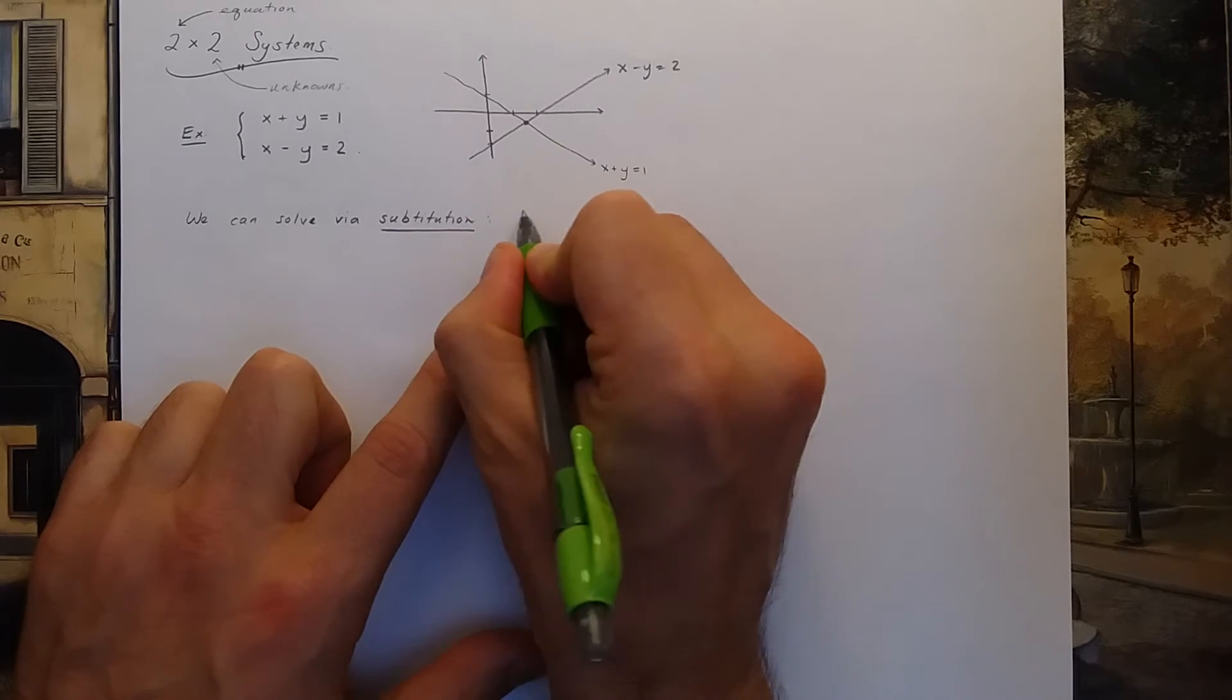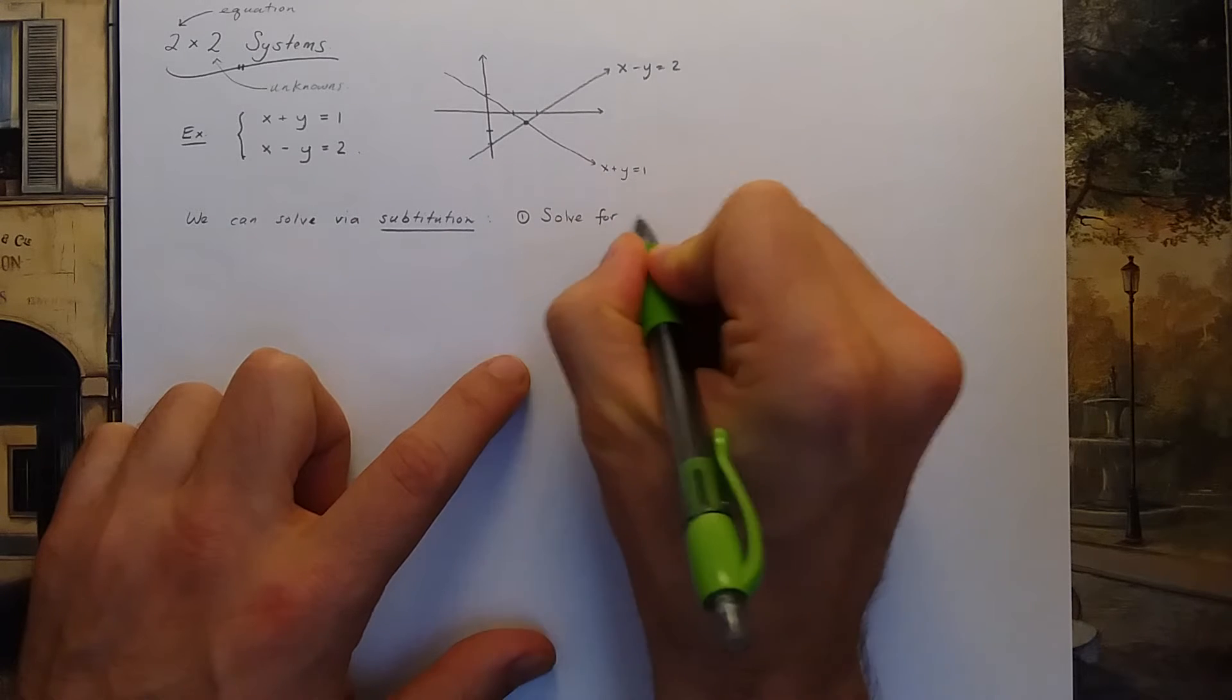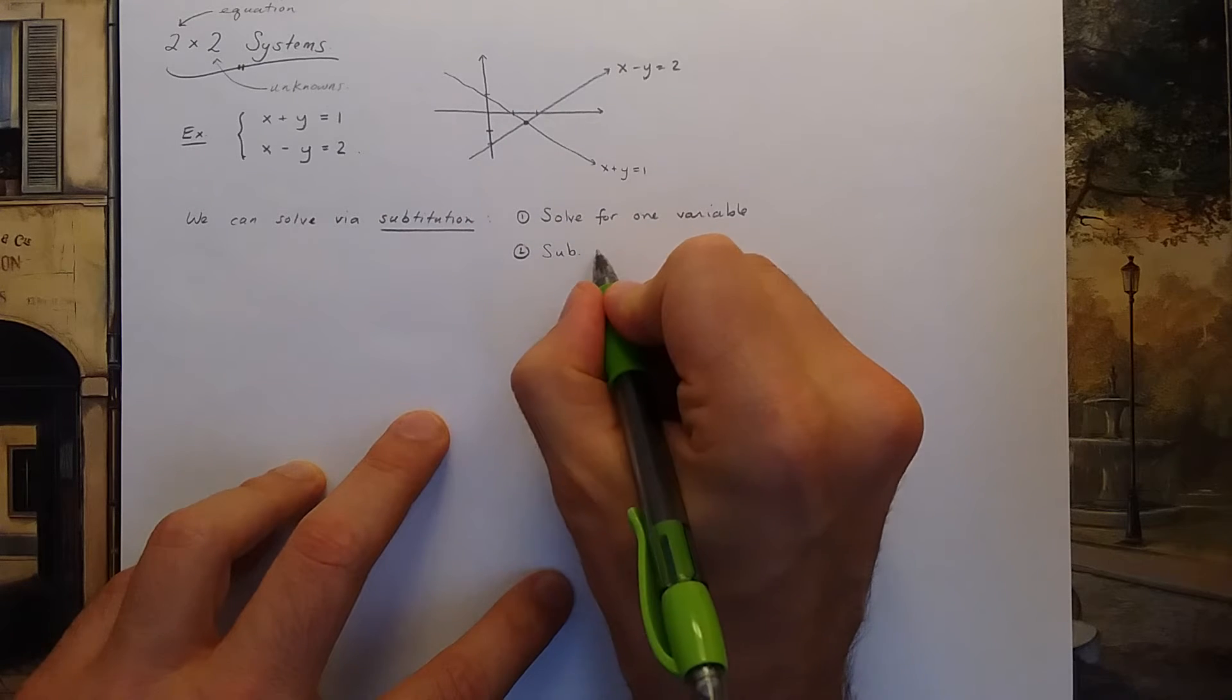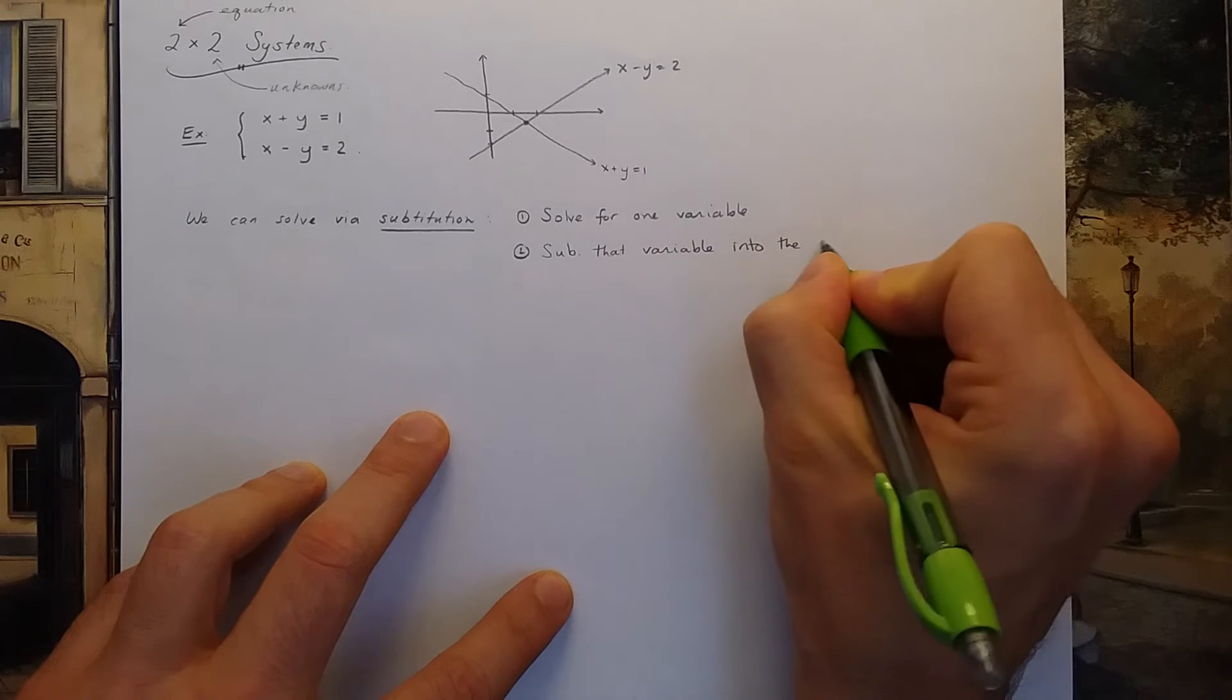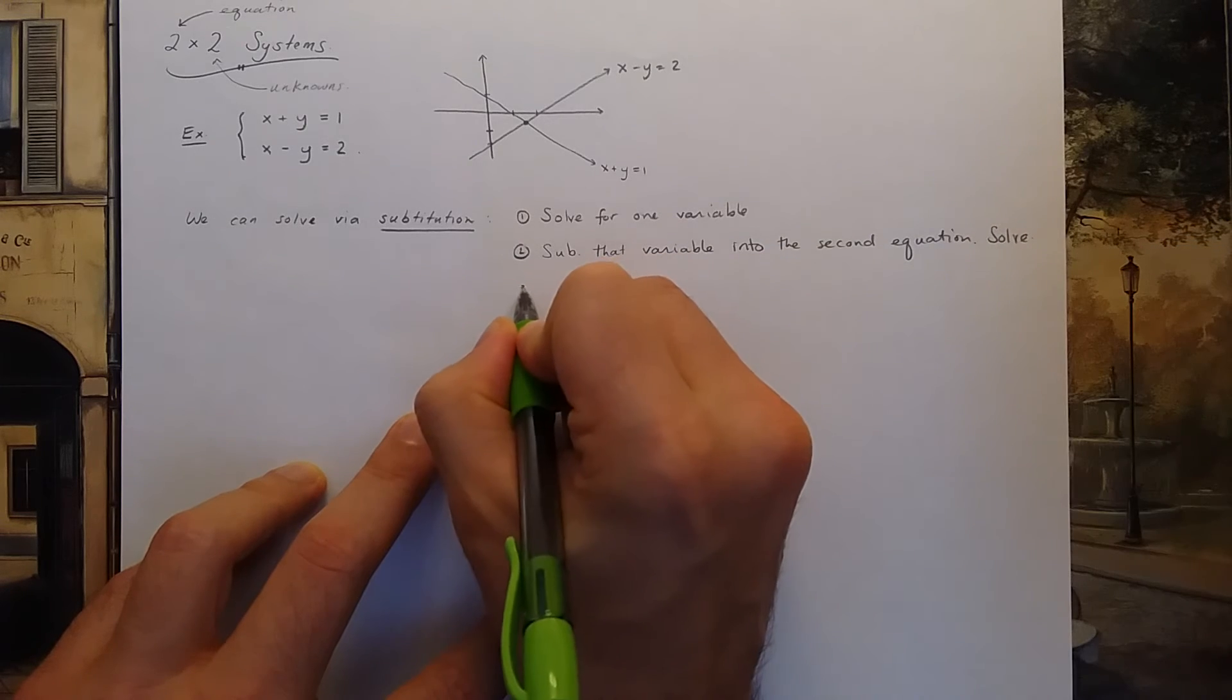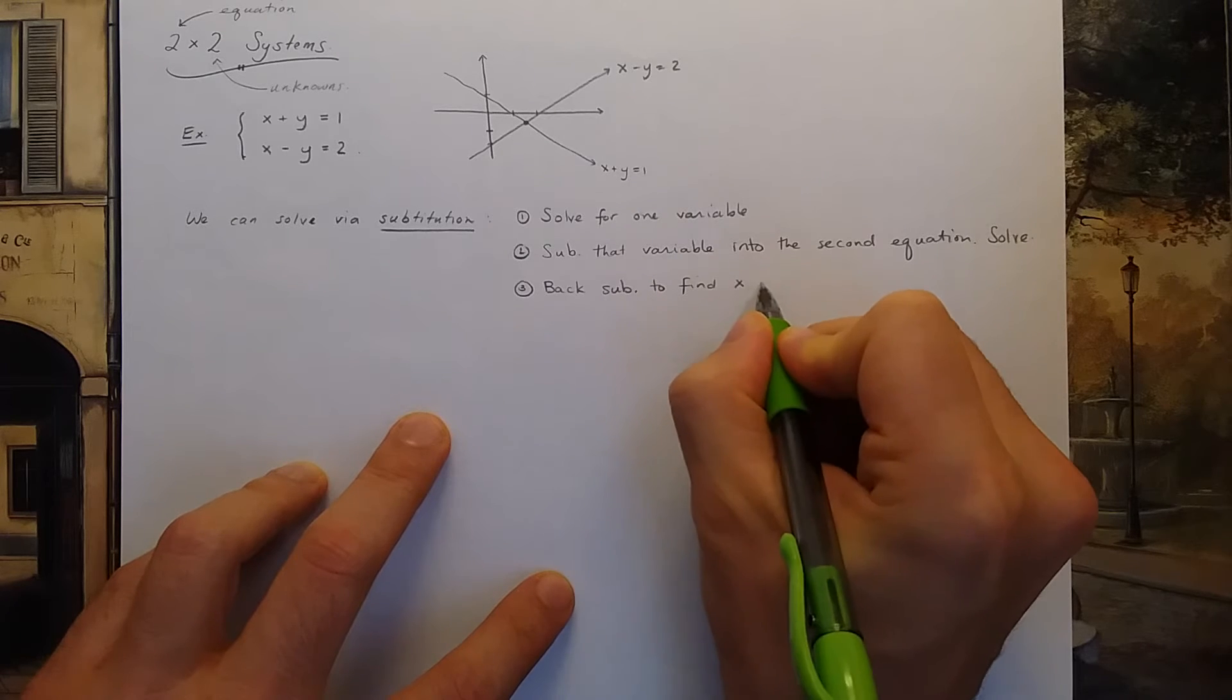And the substitution method asks you to first solve for one variable. So take one of the equations, like the top equation, and solve it for x or y. Second, you substitute that variable into the second equation and solve.